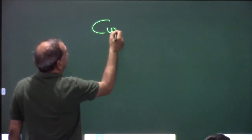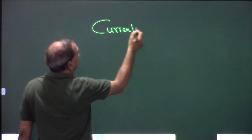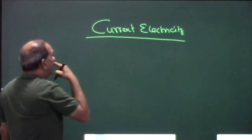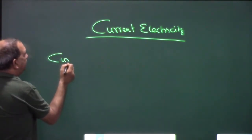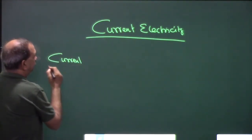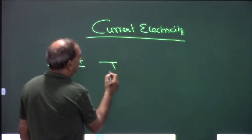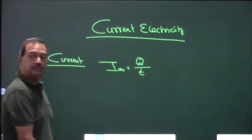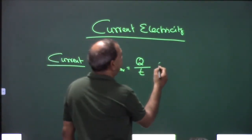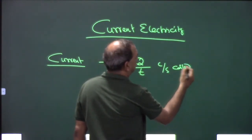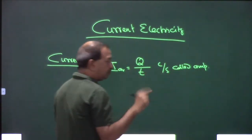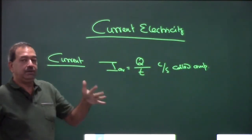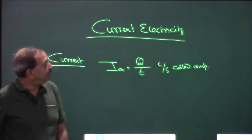Now we are on current electricity. In current electricity, the first concept is current. Average current is defined as total charge upon total time. Coulomb per second is called ampere. Ampere is the SI unit — coulomb is not the SI unit, ampere is. Ampere is a base unit among the base units.